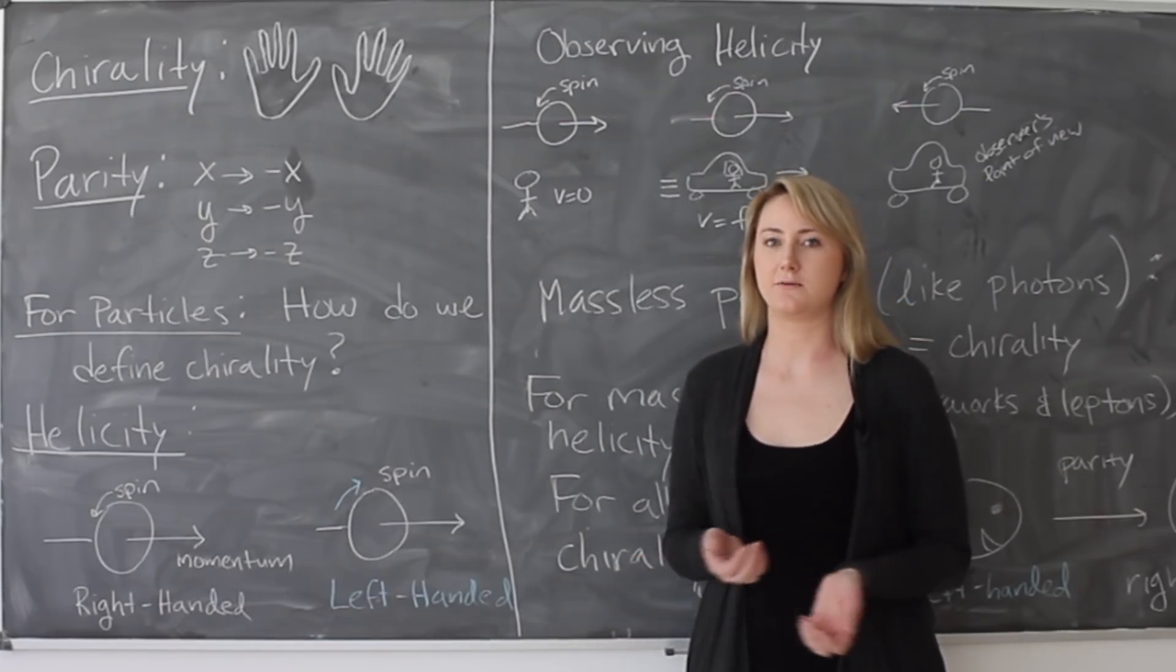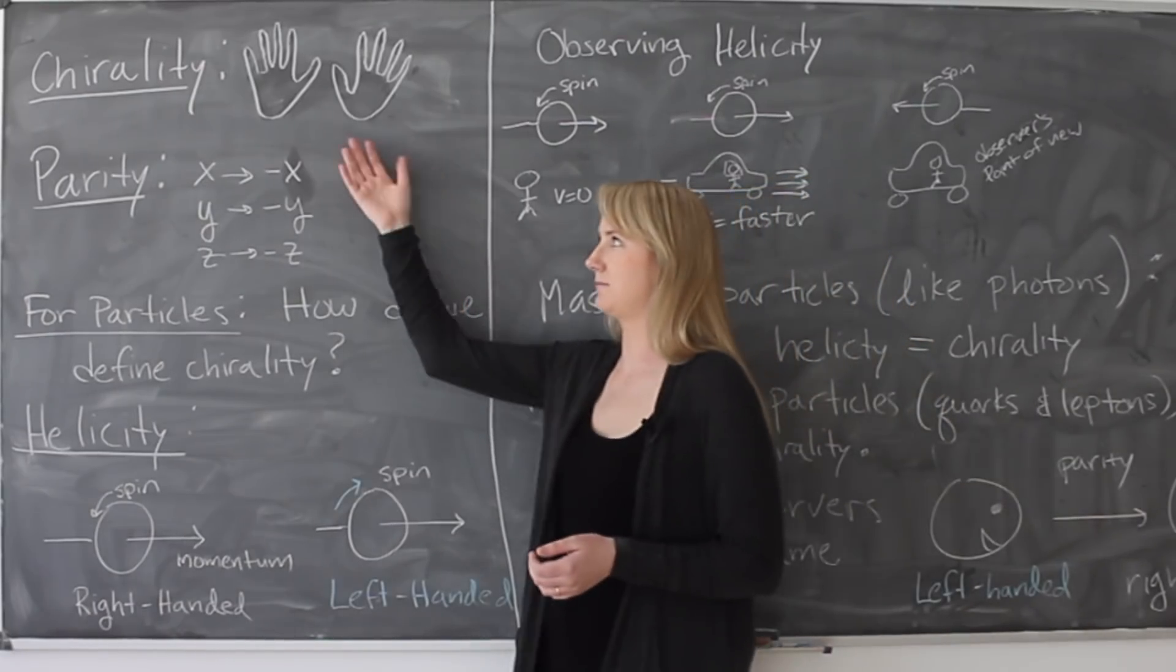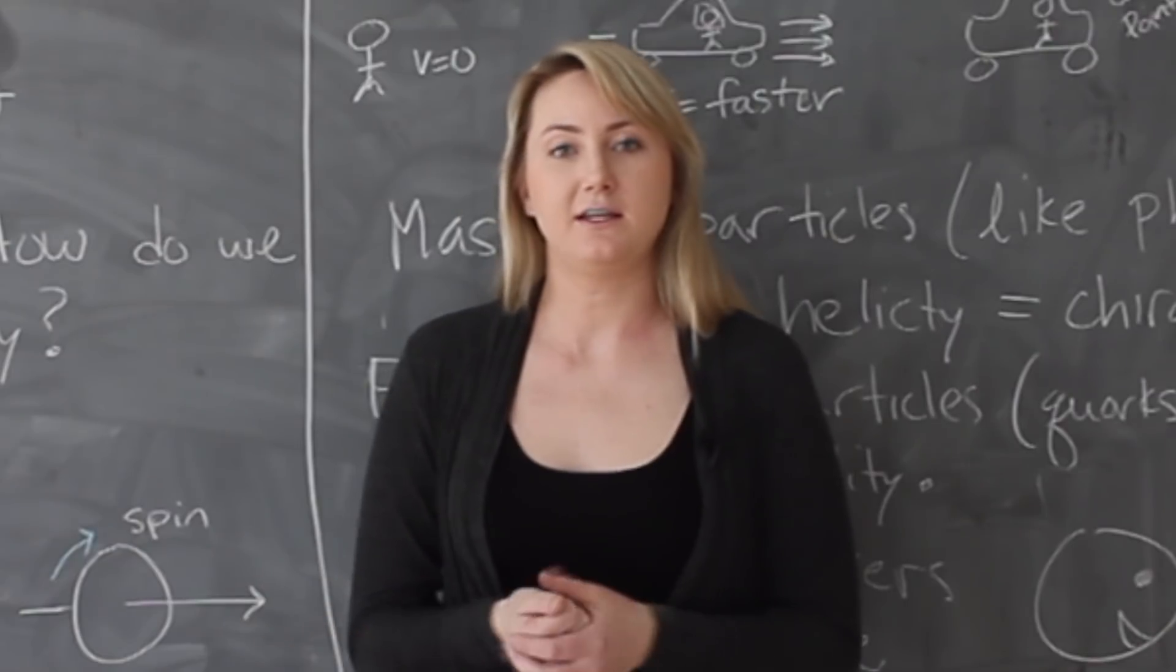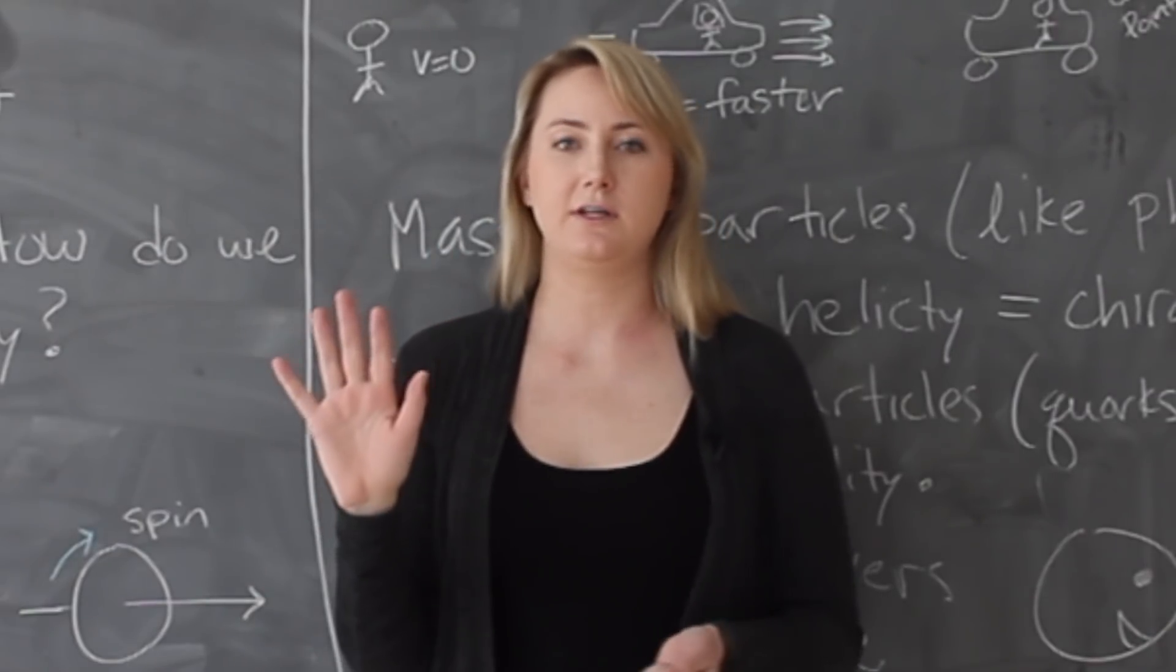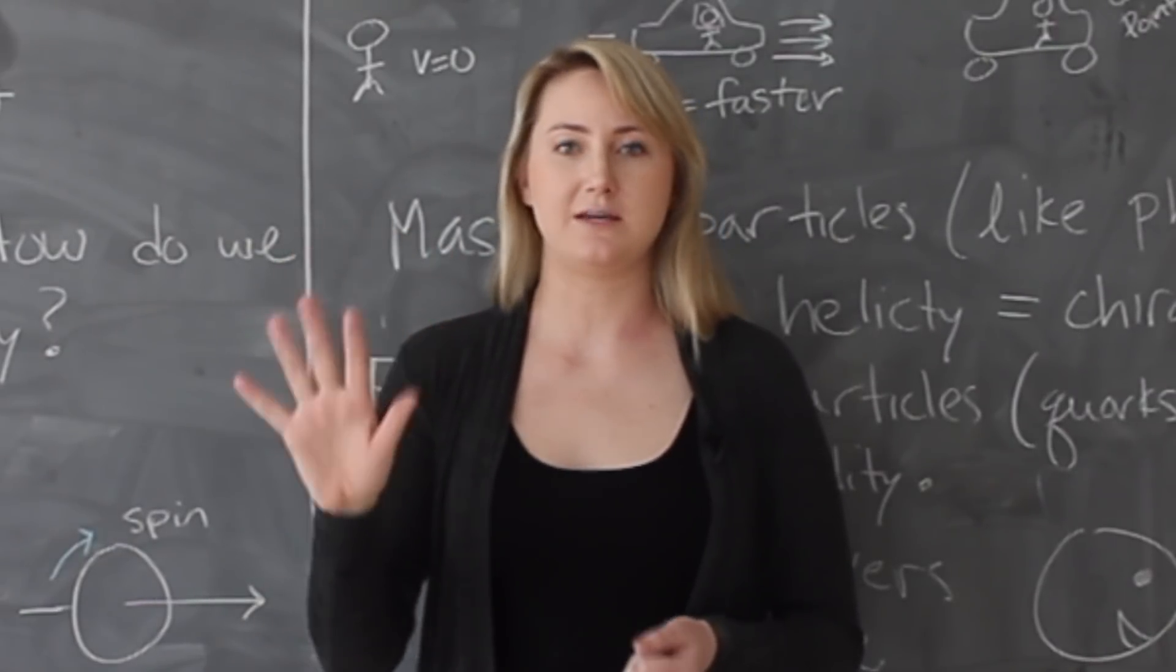To get into left-handed and right-handed fermions, we need to talk about chirality. What chirality is, is an object is chiral if it is not the same as its mirror image.